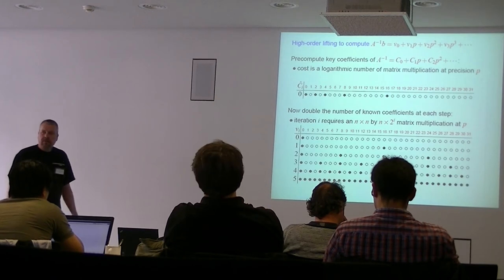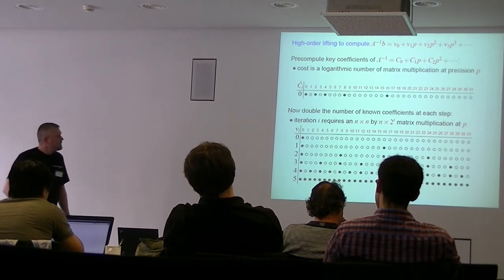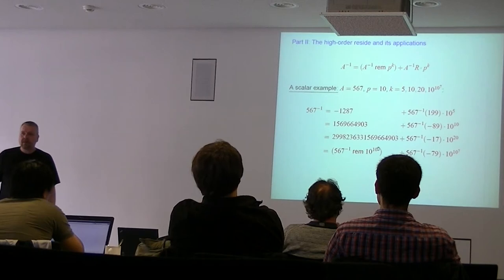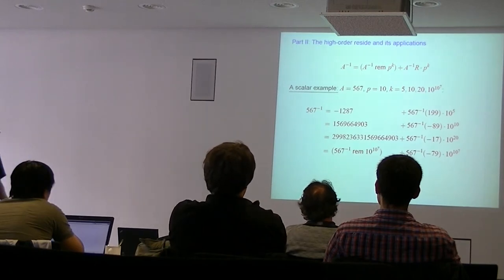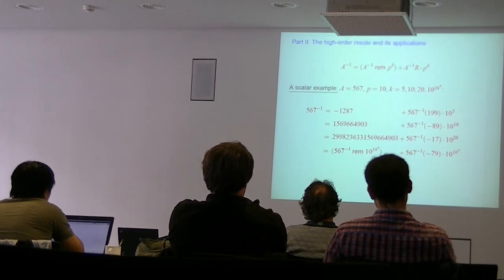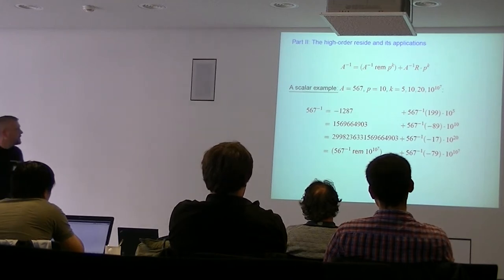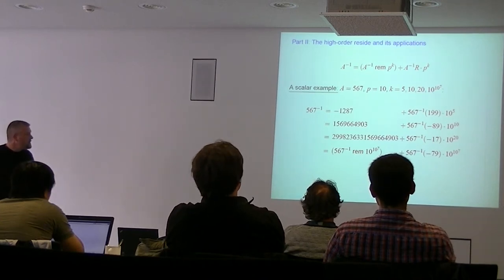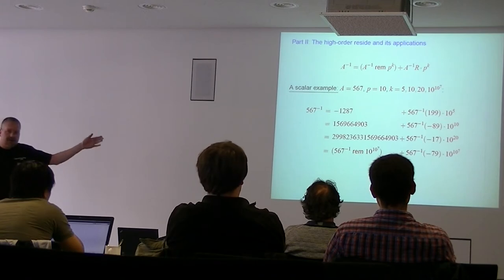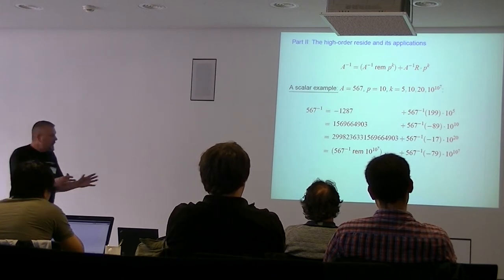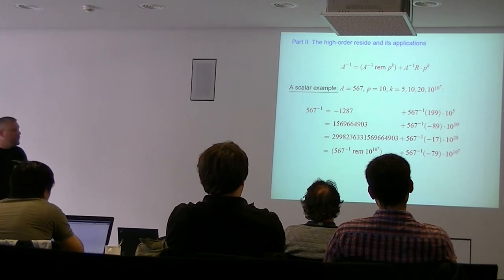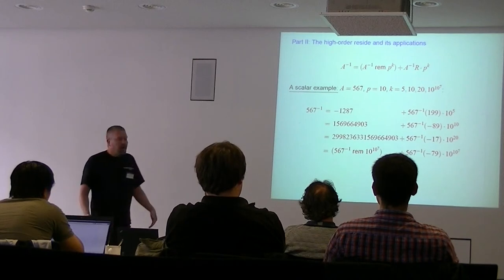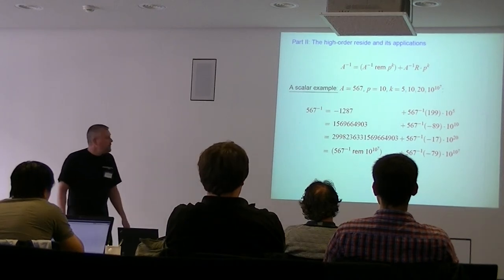That's all I wanted to say at this level about lifting. Now moving to part two: the high-order residue. I've written this equation which has the residue R in it. Let me give a scalar example with 5, 6, 7. These equations hold over the rational numbers — there are no p-adics here, just equations over the rationals.